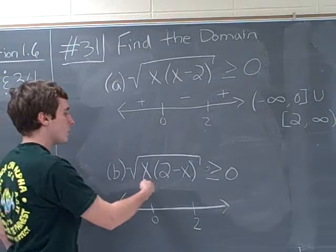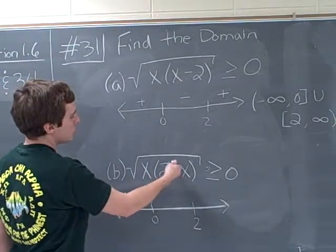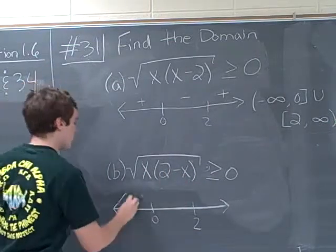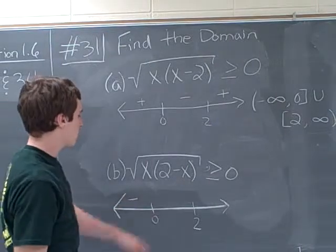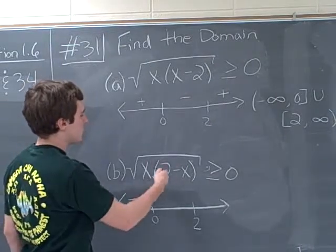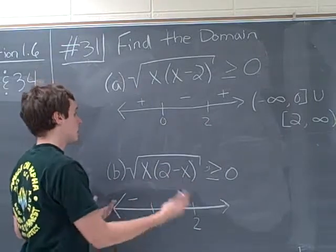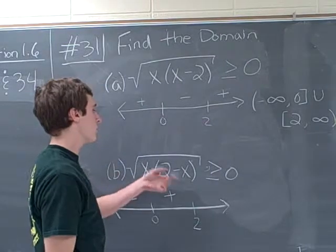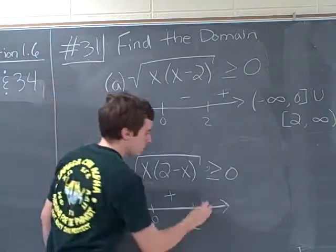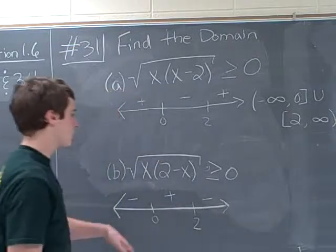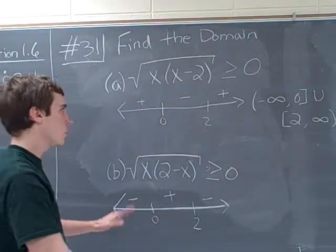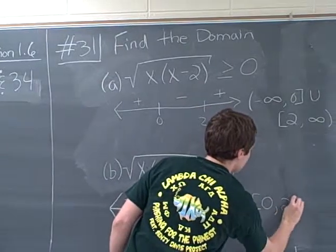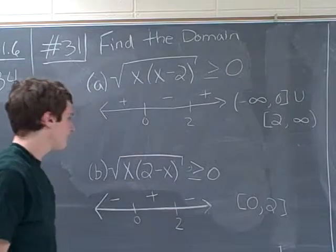We'll plug in negative 1. Negative 1 times 2 minus a negative 1 is 2 plus 1 is 3, and 3 times negative 1 is negative. Here we have, we'll plug in 1, 1 times 2 minus 1, all positive. And here we'll plug in 3 perhaps, 3 times 2 minus 3, negative 1, so we get a negative value here. And so this time, even though it's just a little change, our whole domain changes and we get 0 inclusive to 2 inclusive.